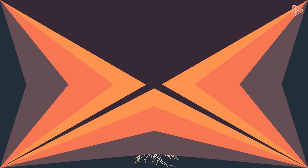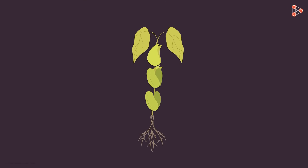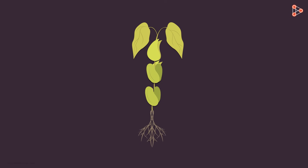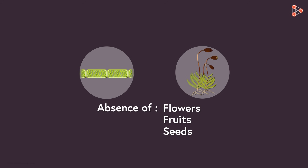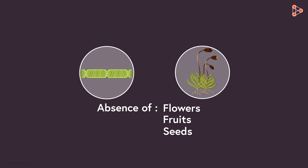We have seen a new plant emerging from a seed when sown in the ground. Where does this seed come from? It comes from some plant. But wait — have we seen all plants always giving us flowers, fruits, and seeds? No, there are many plants that do not bear flowers and fruits. So don't these plants reproduce, or do they reproduce by some other means? Let's answer all these questions in this video.